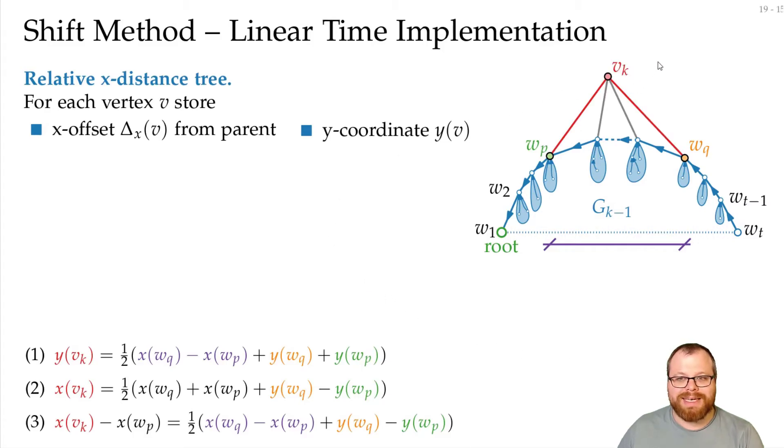So let's assume we have this tree and we have the x distances for all these directed edges. And now we want to add V_k. What do we have to do? What do we have to update? Well, let's go through the steps of the algorithm.